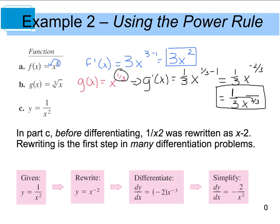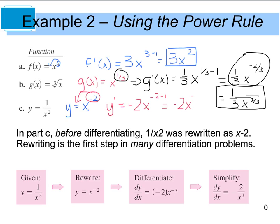Remember, on the AP test you do not have to take it down to that last simplified step — you could have left it as 1 third x to the negative 2 thirds. And finally, for part C, I would rewrite this and say that y is really equal to x to the negative 2nd — rewriting it makes it easier to see what you need to do. So when we go to find y prime, I take this negative 2 and move it down up front. I have negative 2x to the negative 2 minus 1, which gives us negative 2x to the negative 3rd. Simplifying, this gives us negative 2 in the numerator with x cubed in the denominator — so negative 2 divided by x cubed is our final answer for part C.